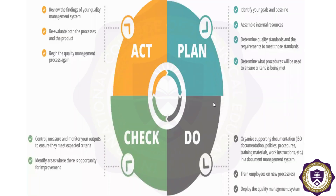Quality control basics essentially consists of four parts: Act, Plan, Check, and Do. Act means how we start the process — about findings, about evaluating, about processing the process of quality control. Then Plan comes — that is how we plan the quality control assignment and how we deal with quality control.